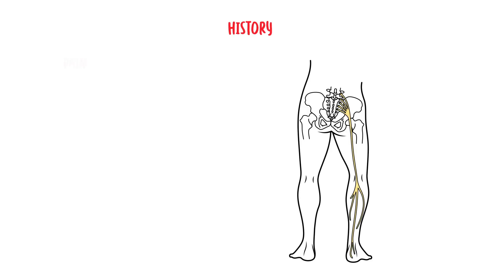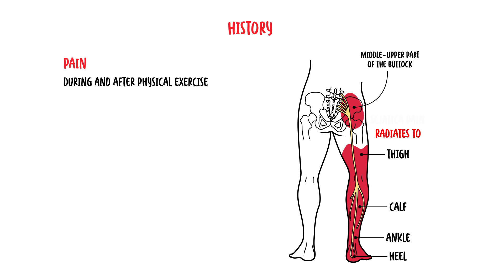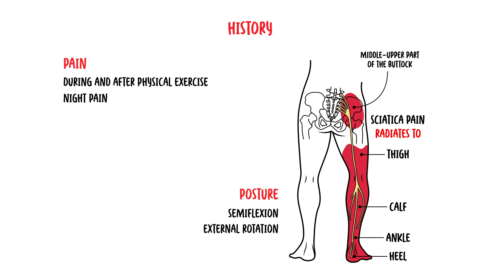The clinical features of piriformis syndrome are really pain located maximally at the middle upper part of the gluteal area during and after physical exercise. Pain can radiate to the posterior thigh, calf, outer leg, ankle and heel — basically sciatica-type pain. There may also be pain at night. In terms of posture, the leg on the affected side may be held in semi-flexion and in external rotation to alleviate the pain.